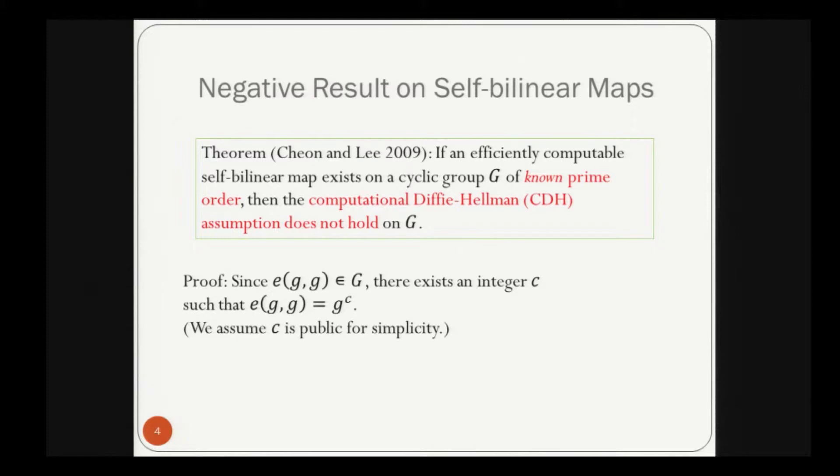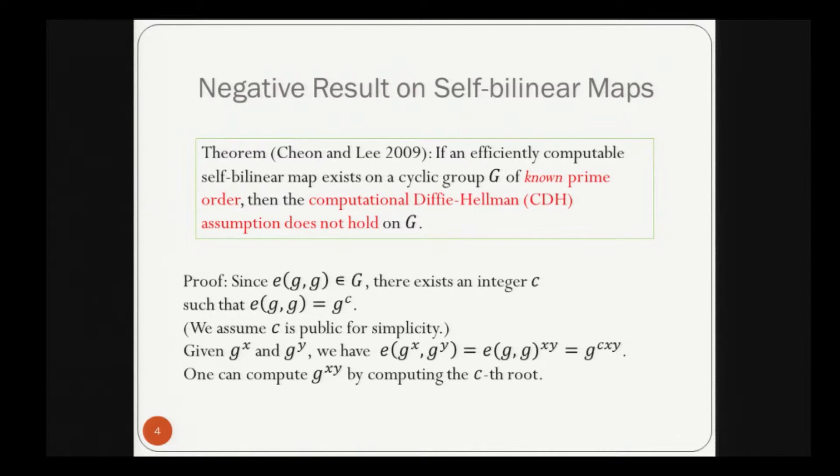Assuming C is public for simplicity, given g^x and g^y, we have E(g^x, g^y) = E(g,g)^{xy} = g^{Cxy}. Thus one can compute g^{xy} by computing the C-th root, breaking the CDH assumption. Even if C is not public, we can still prove this theorem by extending the proof.